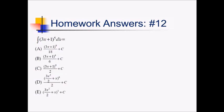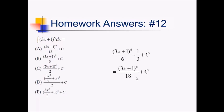On this problem, we want the antiderivative of (3x plus 1) to the fifth. If I just had x to the fifth, I would bump this up to a 6 and divide by 6. I can almost do that, but since I have a linear function inside here, I need to divide by the derivative of that linear function. So, I'm going to have (3x plus 1) to the sixth, all over 6, times one-third — or divide by 3. Simplifying, I end up getting (3x plus 1) to the sixth over 18, plus c. And that gives me answer choice A.